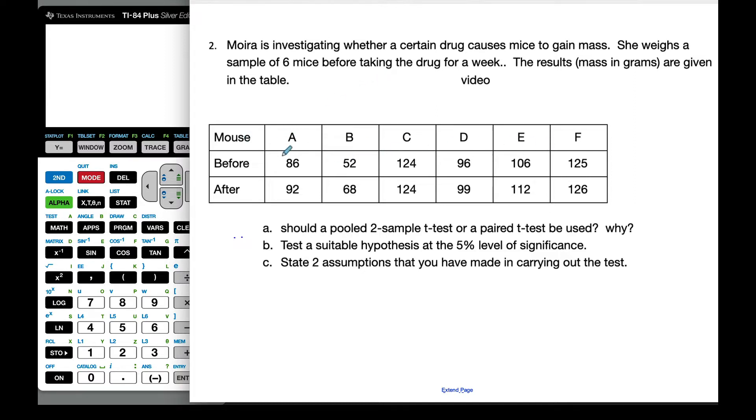So here we have our six mice before, this is how many grams they weigh, and after. And so should we use a pooled two-sample t-test or a paired t-test be used, and why?